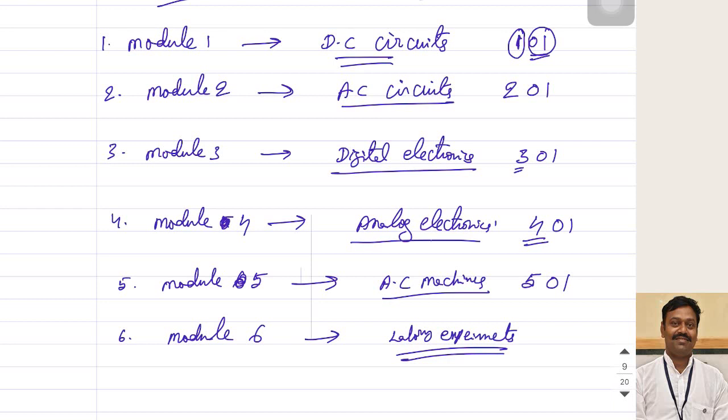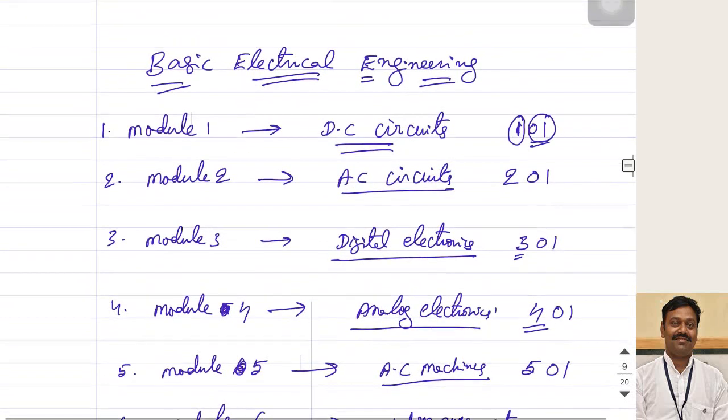As part of this module, I am going to discuss how to use the breadboard starting from that, what are the different components, how to do the color coding, how to identify the components, and how to perform the experiments and get the output. Along with this, if possible, we will try to see whichever softwares are available for basic electrical engineering design.